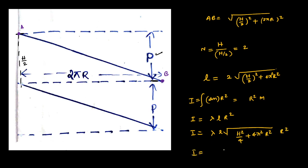So we can even simplify it further: λr² root of, as I supply this to inside, it is going to be h² plus 16π²r². So this would be the moment of inertia of the helix about the given axis.